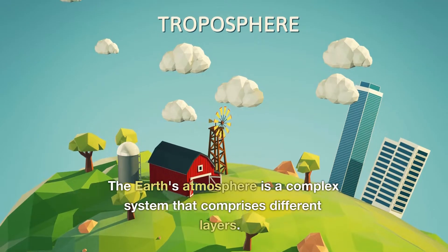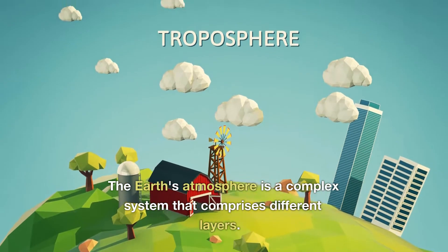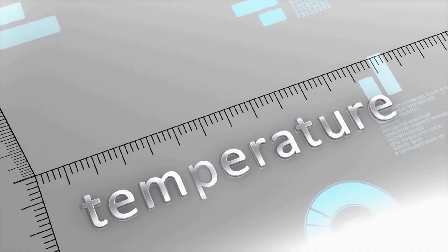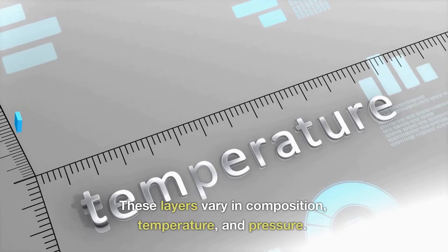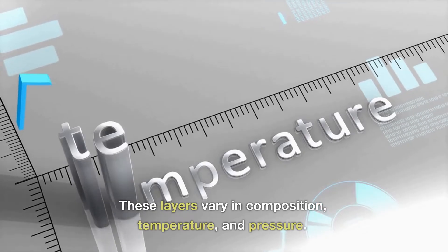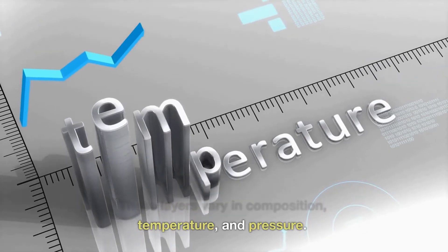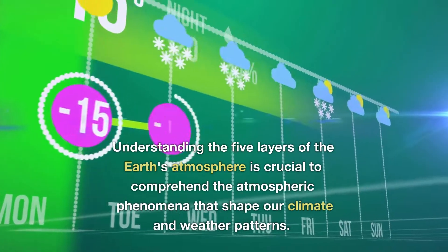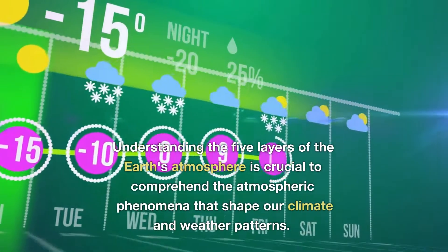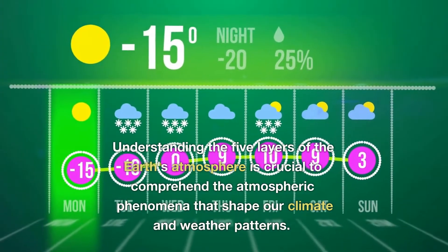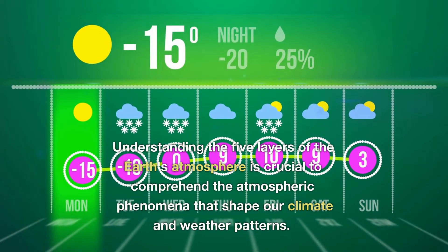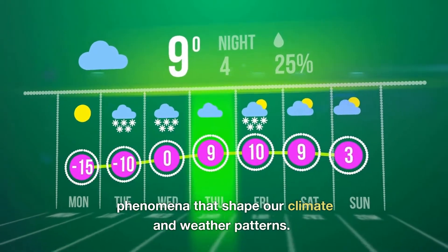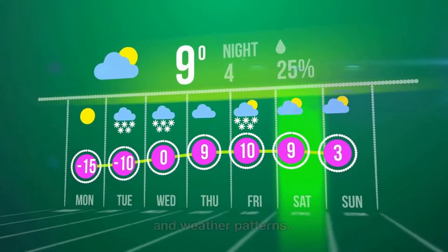The Earth's atmosphere is a complex system that comprises different layers. These layers vary in composition, temperature, and pressure. Understanding the five layers of the Earth's atmosphere is crucial to comprehend the atmospheric phenomena that shape our climate and weather patterns.